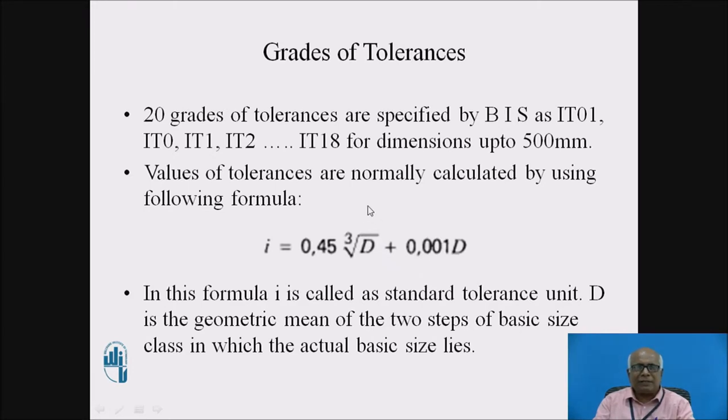Now for each of this grade, we can estimate the value of tolerance. Values of tolerance are normally calculated by using the following formula: I equals 0.45 cube root of D plus 0.001 D. In this formula, I is called a standard tolerance unit and D is the geometric mean of the two steps of the basic size class in which the actual basic size lies.